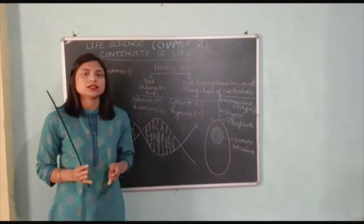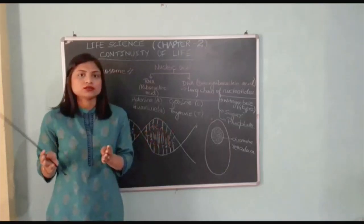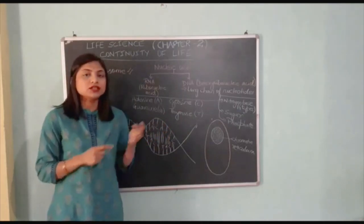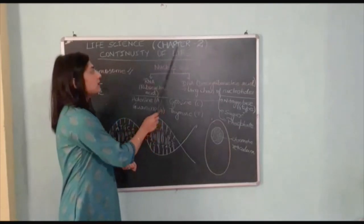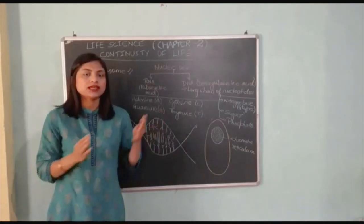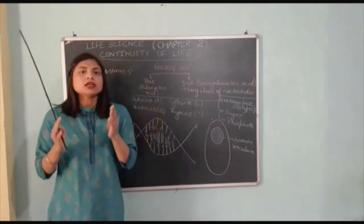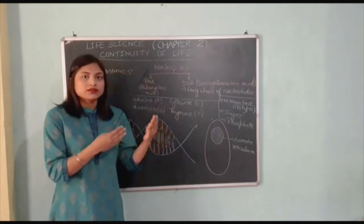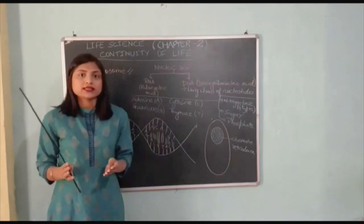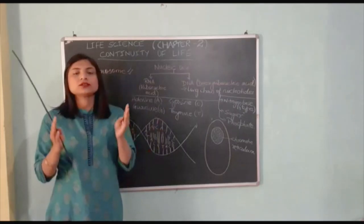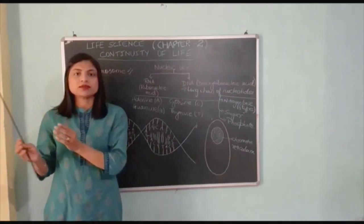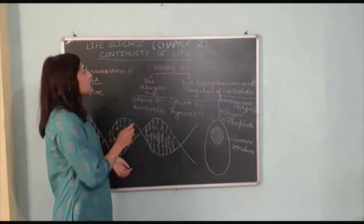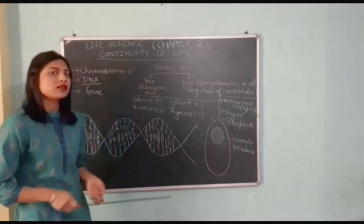Continuity of life - we know the meaning of continue, to move on, to carry on. Continuity of life means how life forms continue. Living organisms produce the same type of living organisms. How living organisms reproduce, that we will all study in this chapter, continuity of life.